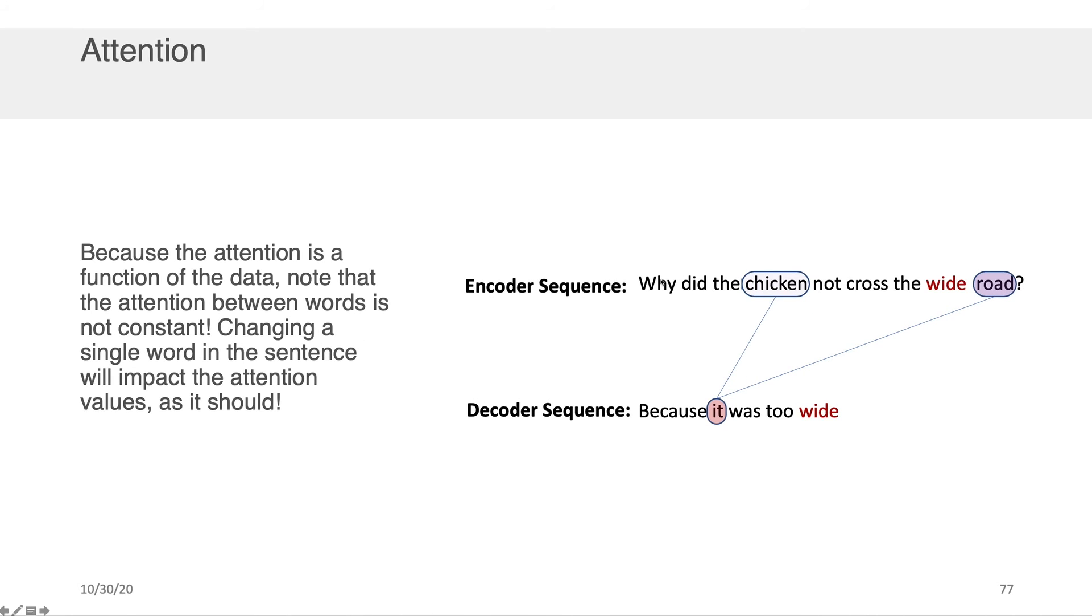But if we change the encoder sequence to say, why did the chicken not cross the wide road? Well, now it in because it was too wide is referring to the road and not the chicken. And so you'd expect the attention in the model to reflect that.